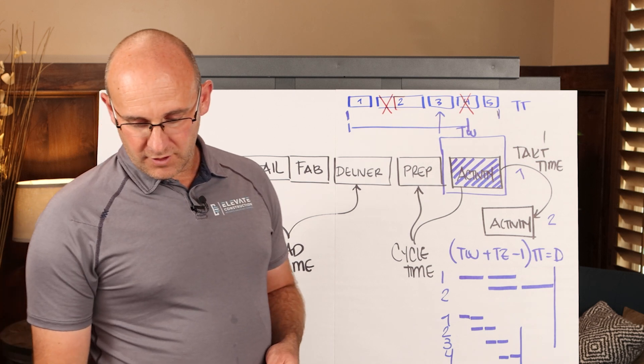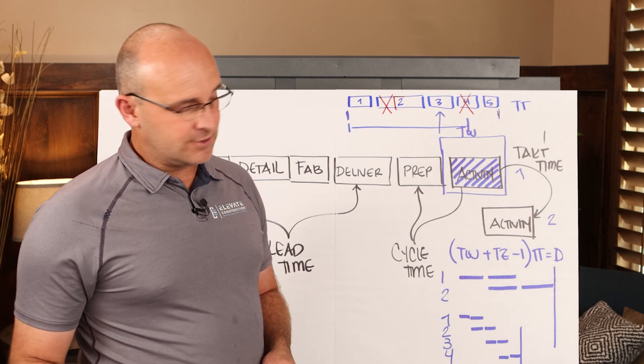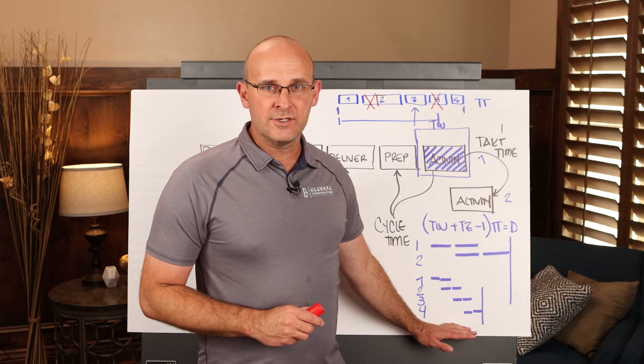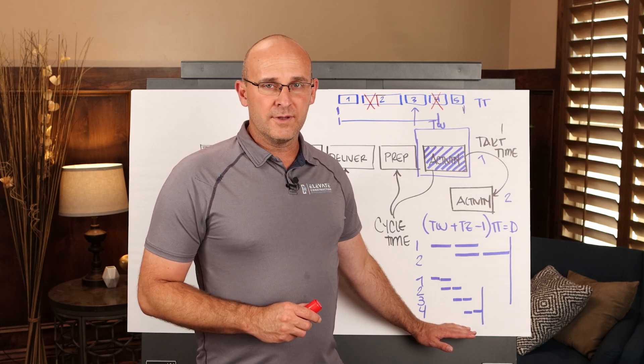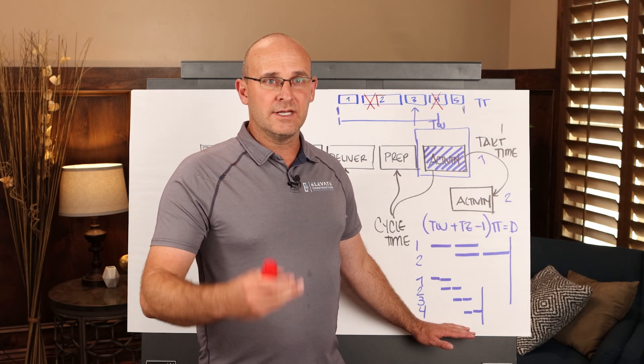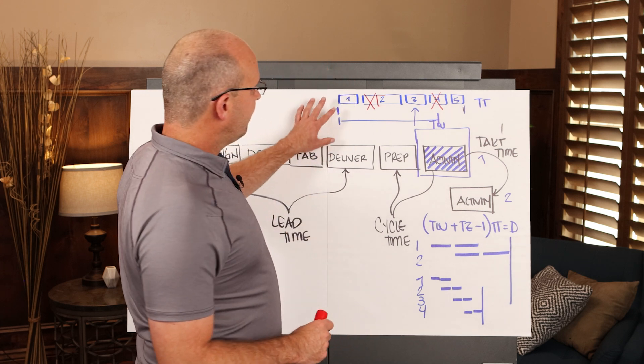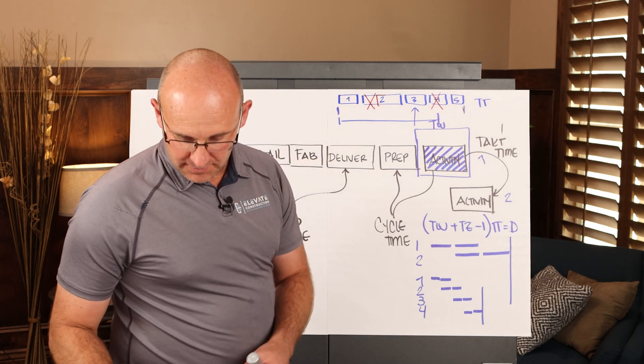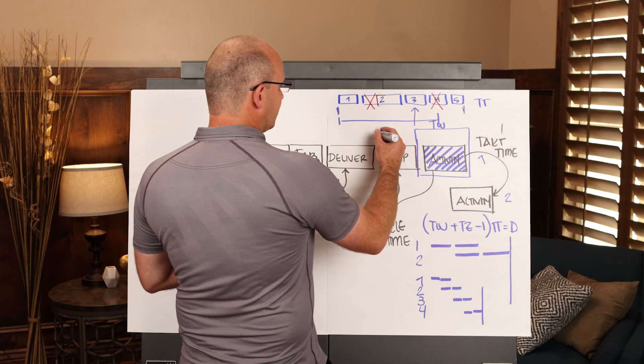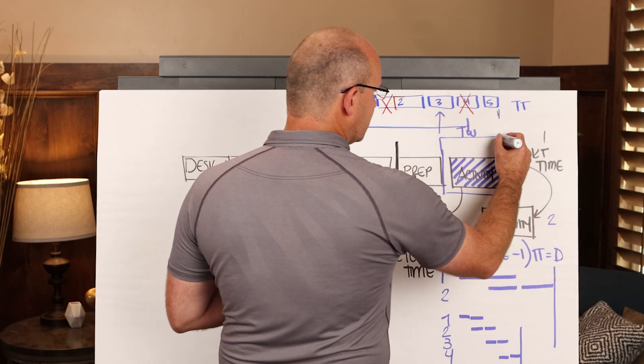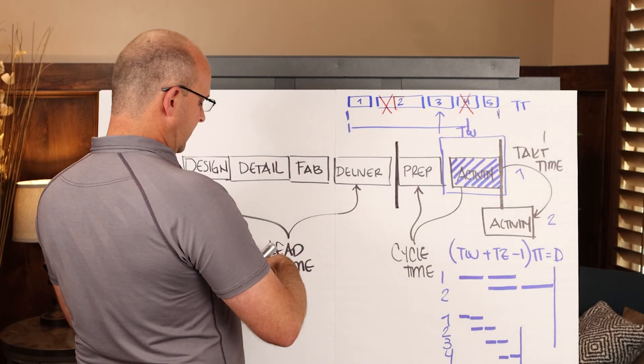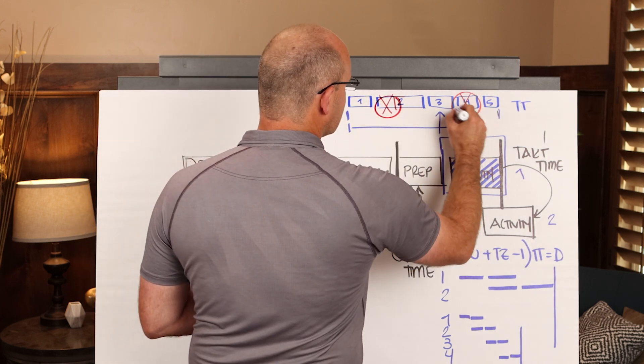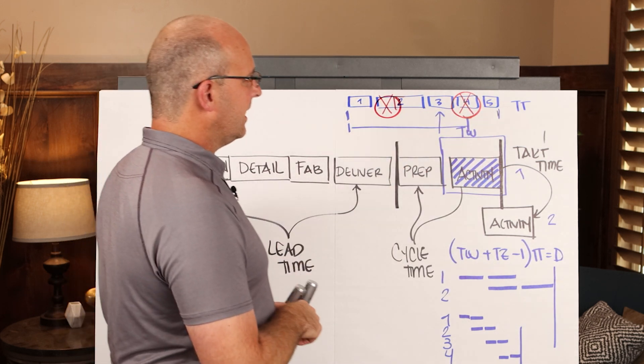So the overall project team to pull these two concepts together should be looking at tact time and evaluating how we should zone the overall building and actually complete on a tacted rhythm. And then foreman should be looking at not just the activity time, but actually the duration from the time it starts to the time it finishes and looking for those non-value added activities, shortening the cycle times and getting better at everything we do.